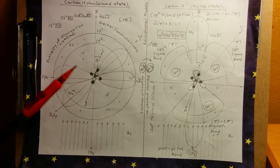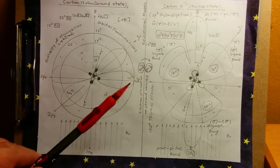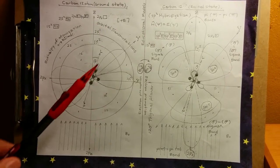In the 2px, this one right here, we have one spin up and in 2p1 we have one spin up.